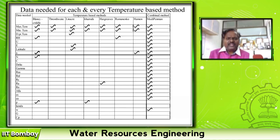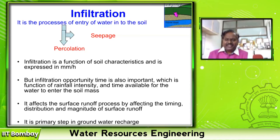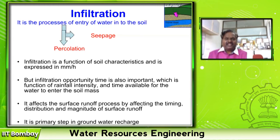This is another important hydrological process, which is the major input for agricultural engineers. If they don't know how to estimate evapotranspiration — also called crop water requirement — they cannot do anything. The next important abstraction or loss is infiltration, which is simply the process of water entering into the earth.